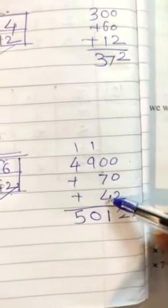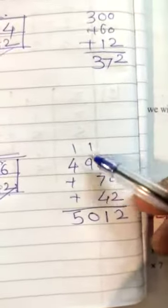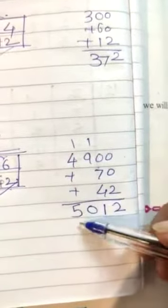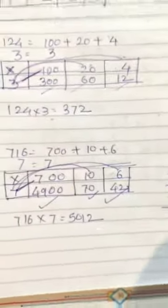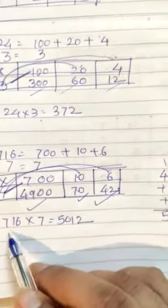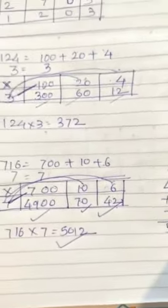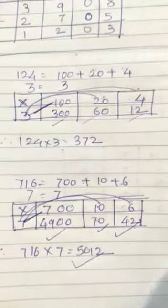Here 2. 7 plus 4, 11. 1 carry. 9 plus 1, 10. 1 carry. 4 plus 1, 5. 5012. So therefore 716 into 7 equals to 5012. Understood? Yes.